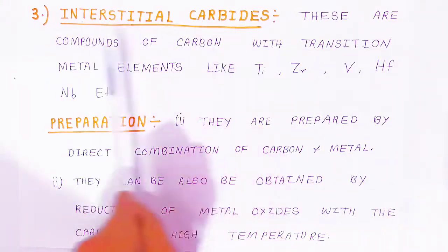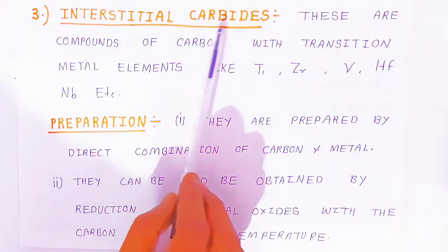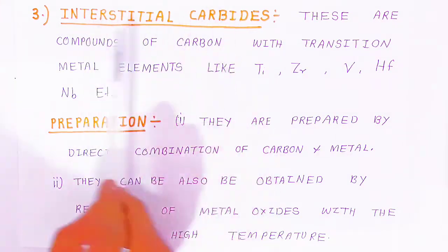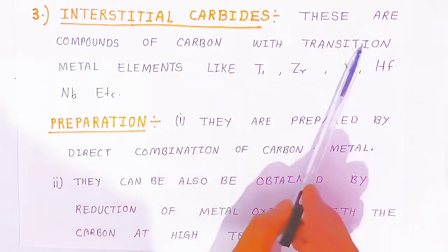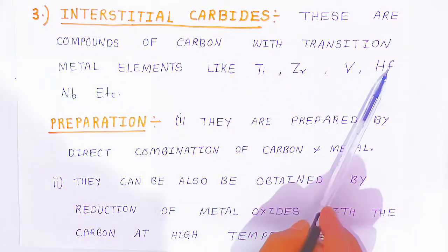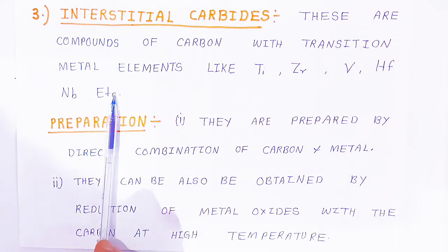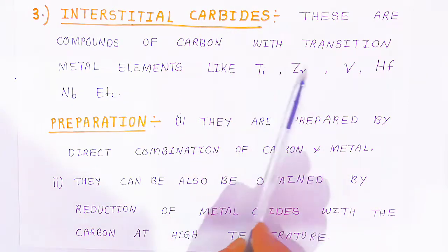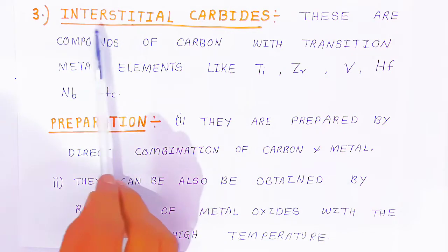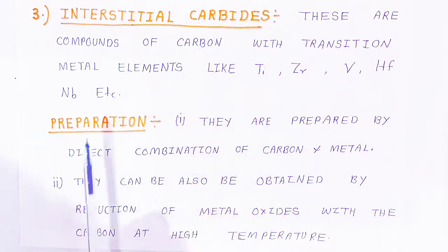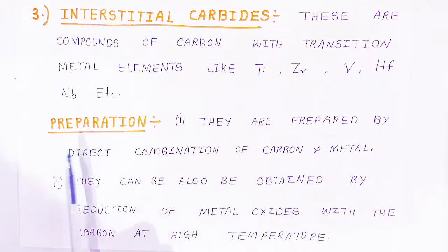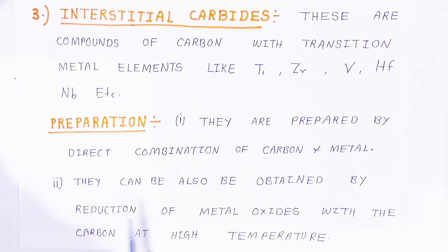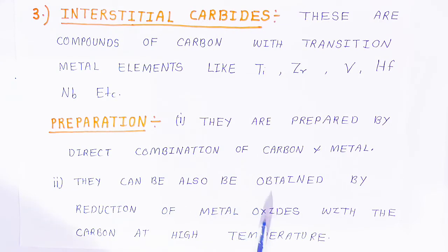The third type of carbide is interstitial carbides. These are compounds of carbon with transition metal elements like titanium, zirconium, vanadium, hafnium, and niobium. They are prepared by direct combination of carbon and the metal, or by reduction of metal oxides with carbon at high temperature — where transition metal oxides are directly reacted with carbon.